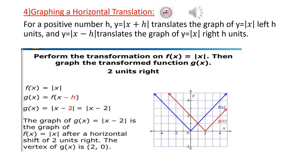Graphing a Horizontal Translation. For a positive number H, Y equal absolute value of X plus H translates the graph of Y equal absolute value of X left H units, and Y equal absolute value of X minus H translates the graph right H units. The graph of Y equal absolute value of X is the blue graph. Graph the function g of X equal absolute value of X minus 2. The graph of g of X is the graph of f of X after a horizontal shift of two units right. Draw the graph of Y equal absolute value of X minus 2 by translating Y equal absolute value of X two units right.